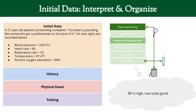So they get us the blood pressure: 243 over 151. That's pretty high. When we interpret and organize our data we have to make sense of it. We know this guy is complaining of a headache — he says it hurts like a jackhammer — and his blood pressure is really high.